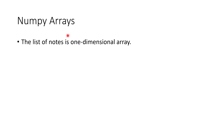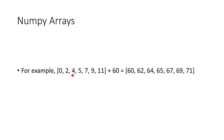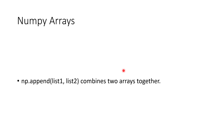To do that I'm going to introduce NumPy arrays. NumPy is a free package for Python. The list of notes is a one-dimensional array so we can keep all the notes in an array. The NumPy package allows array operations such as combining two arrays conveniently. For example, with the list 0, 2, 4, 5, 7, 9, 11, if I add 60, it adds 60 to each element in the array. NumPy's append function allows us to concatenate or join two arrays together.